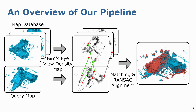Here we show an overview of our pipeline to detect loop closures. First, we generate a database of binary features associated with each local map. Then at a new query location, we compute the binary features from the corresponding density map and match them against the previously recorded features from the database. We refine these matches using a 2D geometric alignment based on the RANSAC outlier rejection scheme. This provides us with a 2D pose constraint between detected loop closures for pose graph optimization.